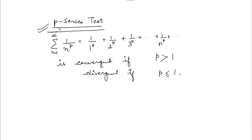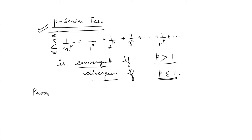This test says the series is convergent if P is strictly greater than 1 and divergent if P is less than or equal to 1. Now let's see the proof. Let's suppose the value of P is greater than 1.